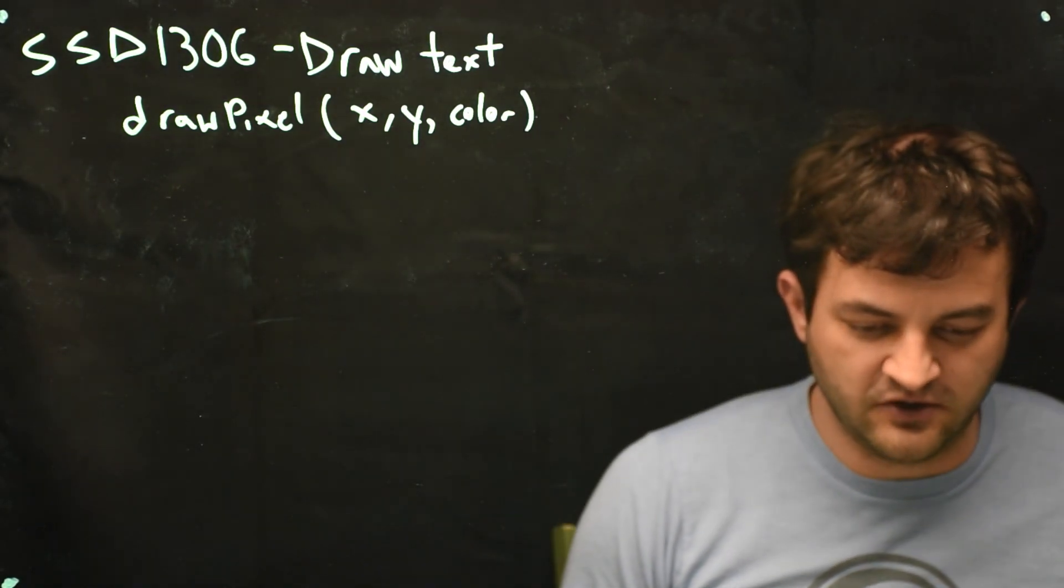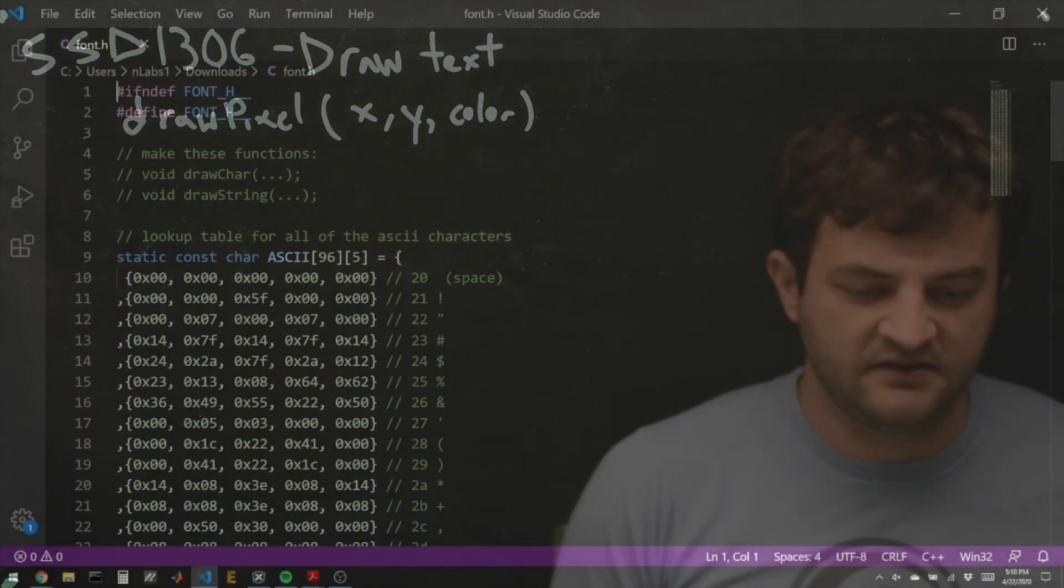I've got a piece of code we can look at that does that. It's not really code but a big image. So in this file font.h I've got a giant constant character array called ASCII.